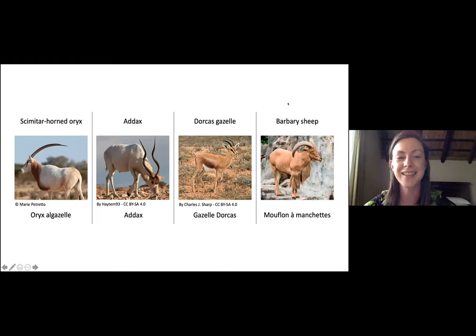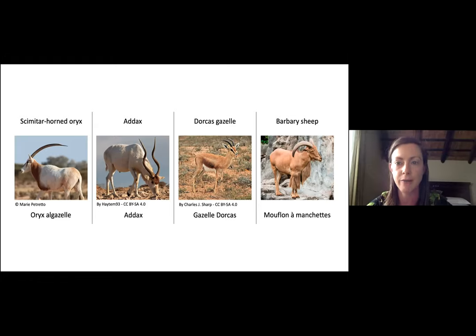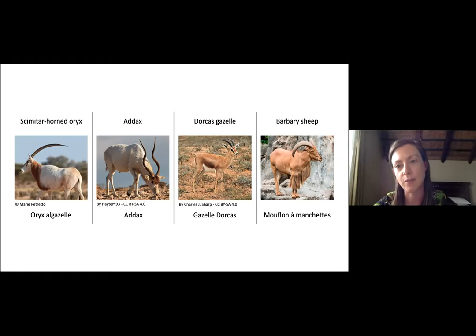These are the species we've been looking at. We've primarily been focusing on endangered antelope species — the scimitar-horned oryx and the addax — but we also have samples from Dorcas gazelles and Barbary sheep. This is particularly interesting because these species differ in how they interact with their environment and their ability to cross from fenced protected areas into areas where they have more contact with livestock.